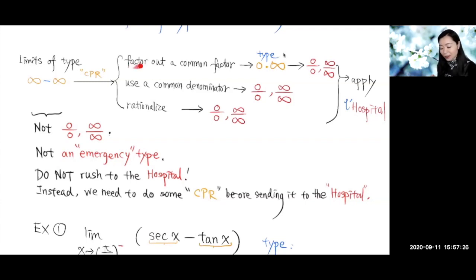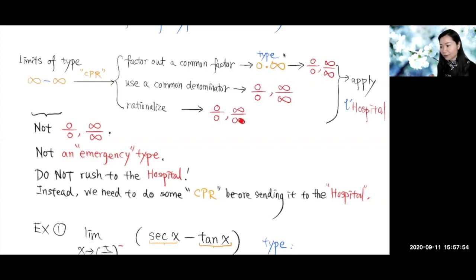If you factor out a common factor, you're going to turn that into the type zero times infinity, and then later you can change it to one of the two emergency types. When you use a common denominator, you're going to turn that into a single quotient — either zero over zero or infinity over infinity. And if you rationalize it, you're going to turn that into one of the two emergency types. Then you can rush to the hospital and apply L'Hôpital's rule.